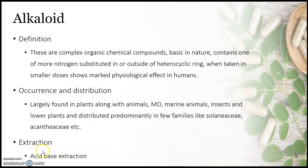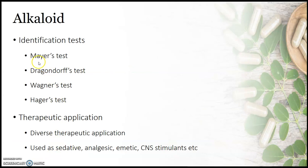For the extraction of alkaloids, different methods have been suggested by different scientists, but acid-base extraction is the most widely used. The details of acid-base extraction can be found in our book. For identification tests in alkaloids, there are basically four general chemical tests used to determine or identify alkaloids, despite their different classes.